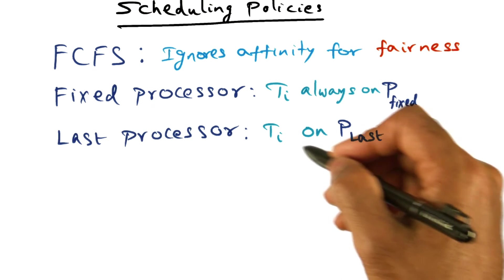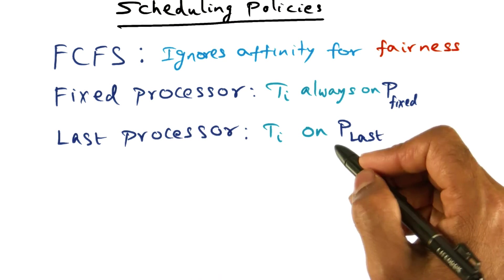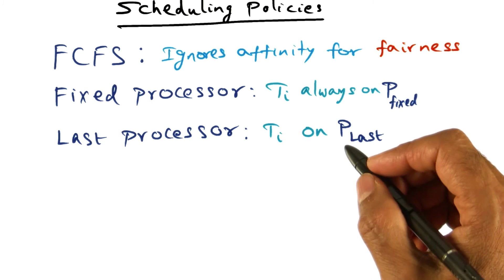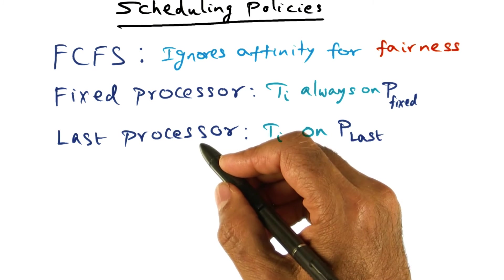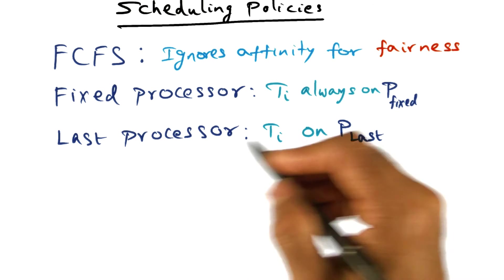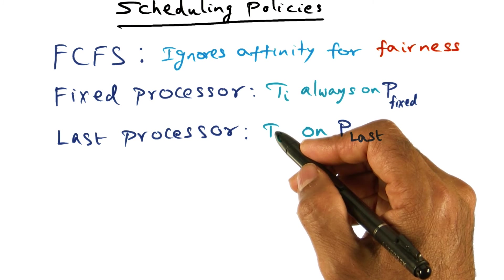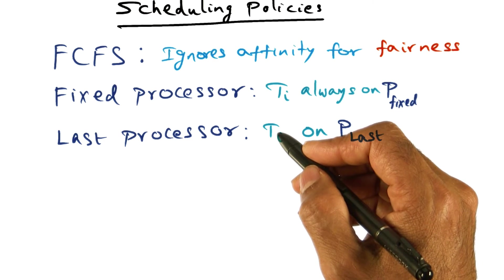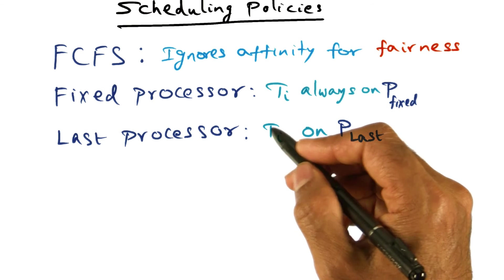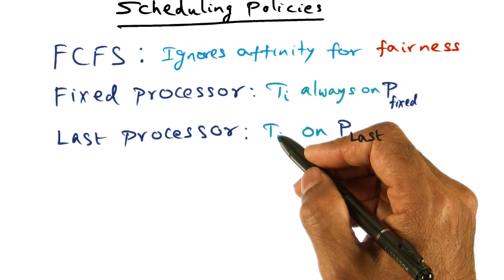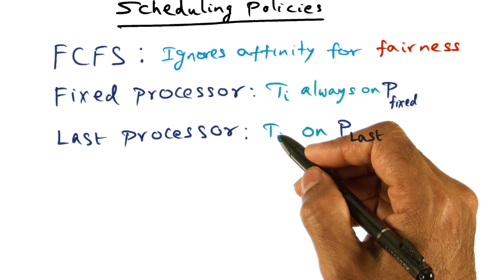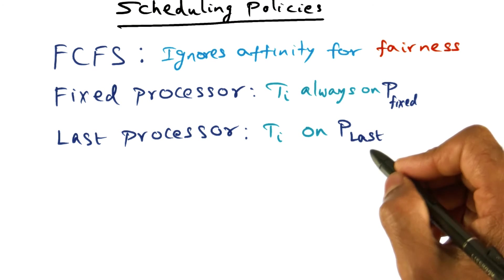The third scheduling policy is what is called a Last Processor scheduling policy. The idea here is the processor is going to pick among the set of threads that are available to be run at any point of time. It is going to pick a thread that used to run on it. Or in other words, if TI, the last time it had any cycles from the system was in a particular processor...